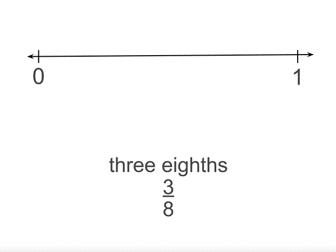What about 3 eighths? This time, we divide the line into 8 equal parts, and 3 eighths is the third point along.